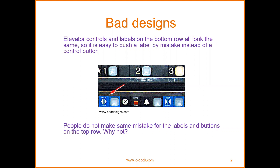When we talk about human-computer interaction, we're talking about design. There are what we call bad designs. For example, in elevator controls, labels on the bottom row all look the same, so it's easy to push the label by mistake instead of a control button. People do not make the same mistake for labels and buttons on the top row. In the elevator design layout, you are familiar with it because you already have experience using an elevator — numbers indicate floor levels, buttons for door open, door close, emergency alarm, and stop.